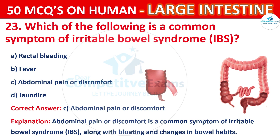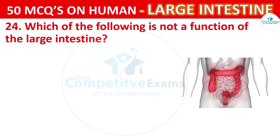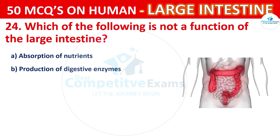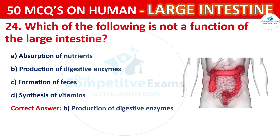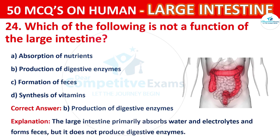Question 24. Which of the following is not a function of the large intestine? Your options are: Absorption of nutrients, Production of digestive enzymes, Formation of feces, or Synthesis of vitamins. The correct answer is B, i.e. Production of digestive enzymes. The large intestine primarily absorbs water and electrolytes and forms feces, but it does not produce digestive enzymes.